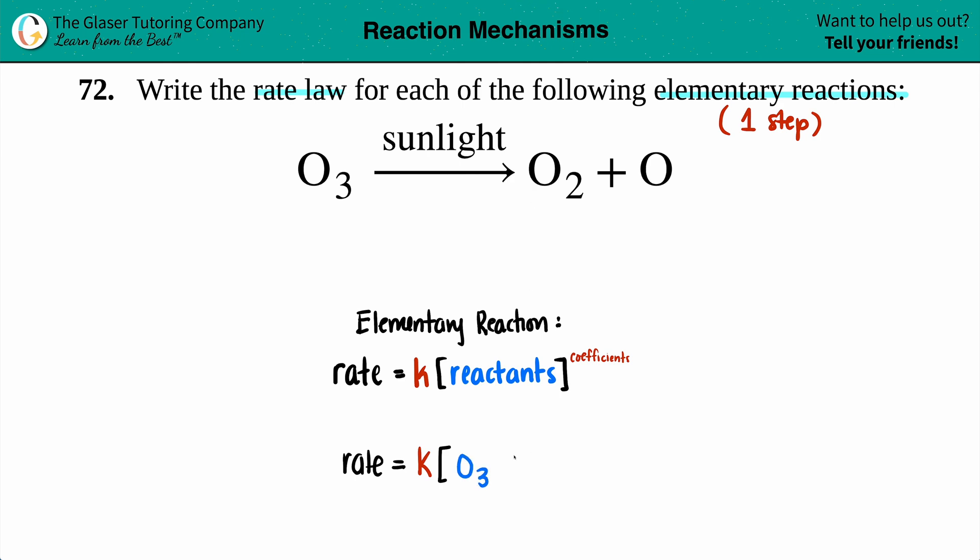That's the only reactant that I have. Sunlight is not a reactant because it is not on this side. Usually when they put information on the top of an equation, it's what you had to add or maybe a catalyst.